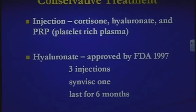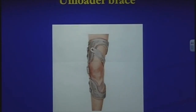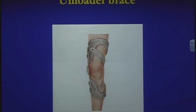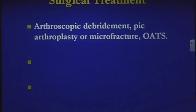Another conservative treatment is the unloader brace, which shifts weight from one side of the knee to the other where there's good cartilage. For a patient with a varus knee and arthritis on the inside, the straps pull the knee toward the knock-knee position, shifting weight from the medial to the lateral side of the knee.